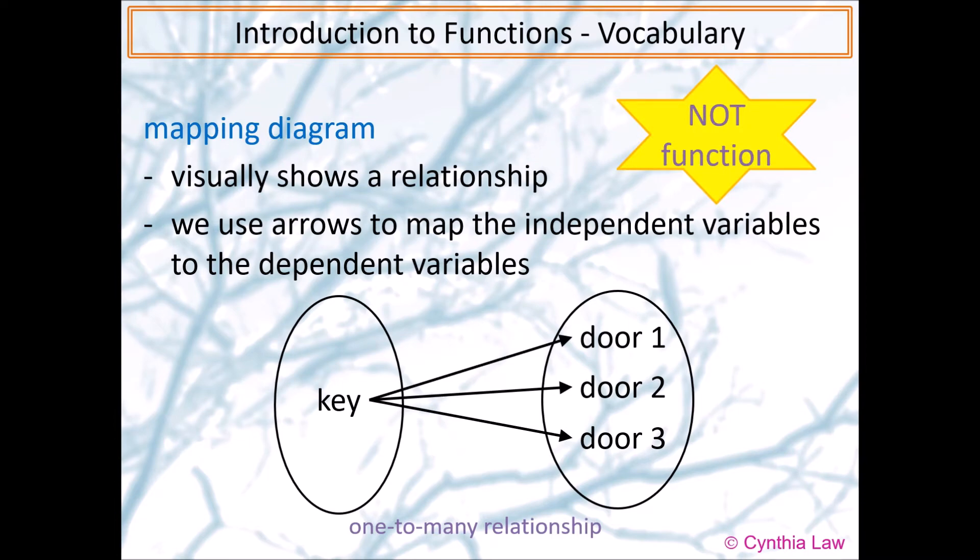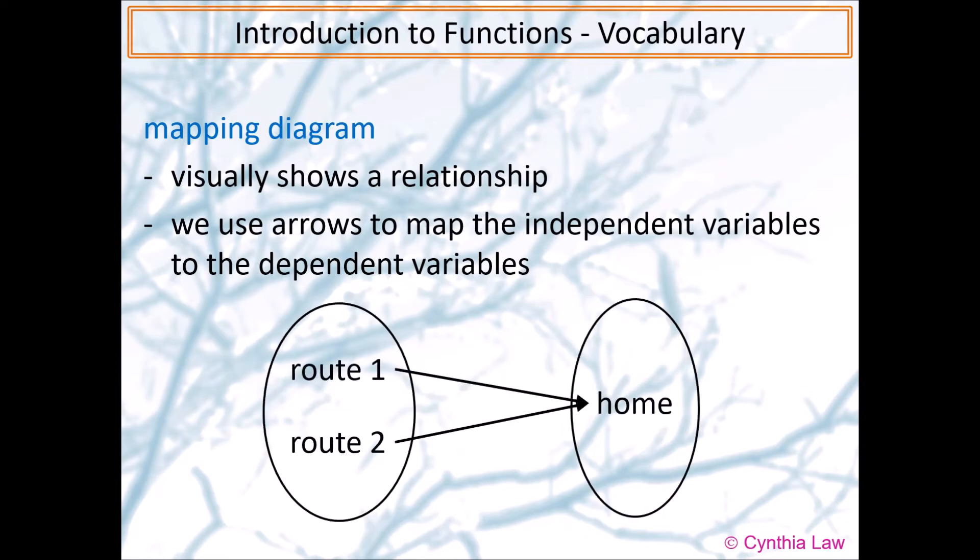A one-to-many relationship is not a function. Another example. We talked about that we are traveling and we have different ways to go to a destination. So let's say route one and route two, both of them leads to home. So this is a many-to-one relationship. And we draw the arrows from route one to home, and we also draw an arrow from route two to home. So in this case, this is a function.